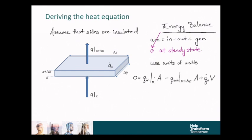To actually make this happen, we're going to multiply the flux by the area. So the flux going into the slab at x times that area, minus the flux coming out of the slab at x plus delta x. And then we're going to add to that the generation term multiplied by the volume of the slab.